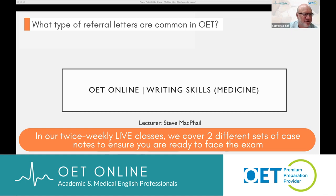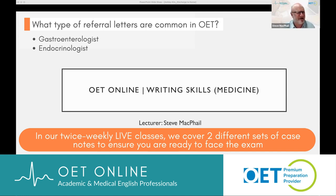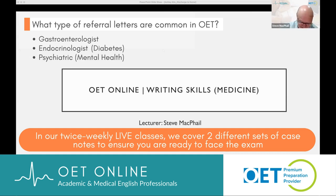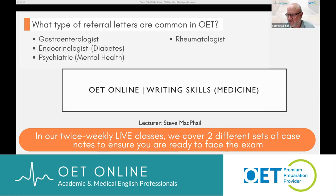So we've got referral to gastroenterologist. Could be to an endocrinologist. And what sort of cases are those? If you're writing to an endo or to a gastroenterologist — endocrinologist, is that diabetes? Yes. So endo: diabetes. Could be psychiatric — mental health. Rheumatologist: Mishek, why would you write to a rheumatologist? Is that for rheumatoid arthritis? Neurologist is a very common one.